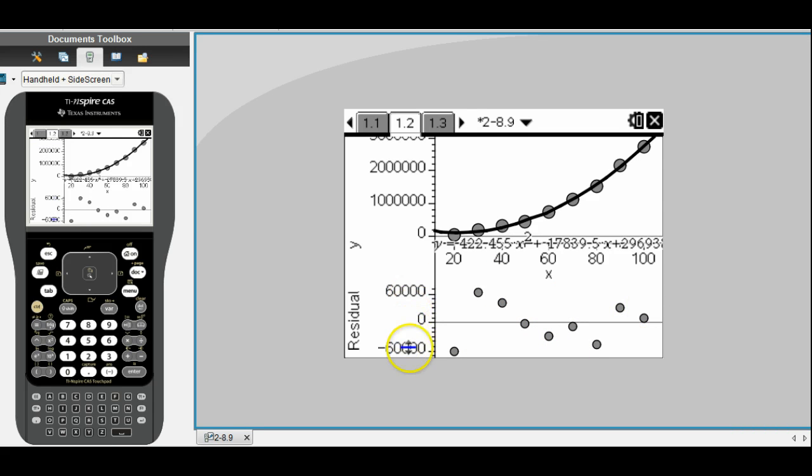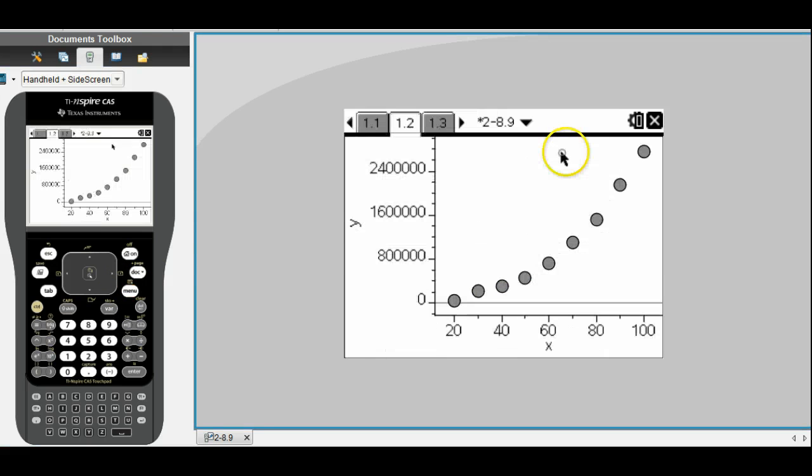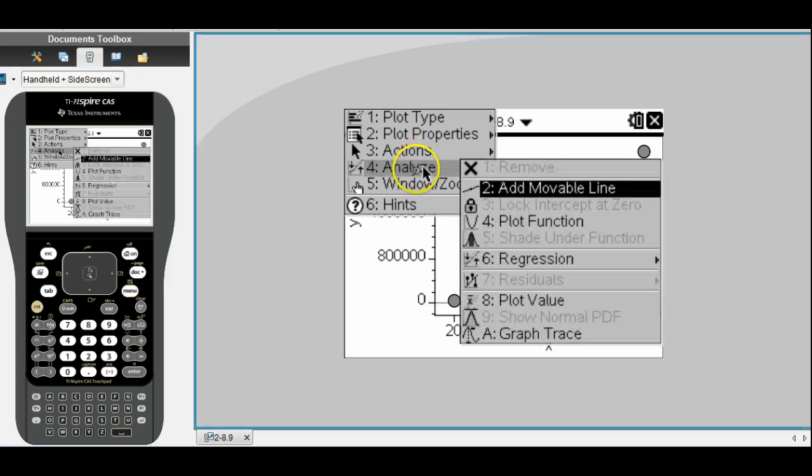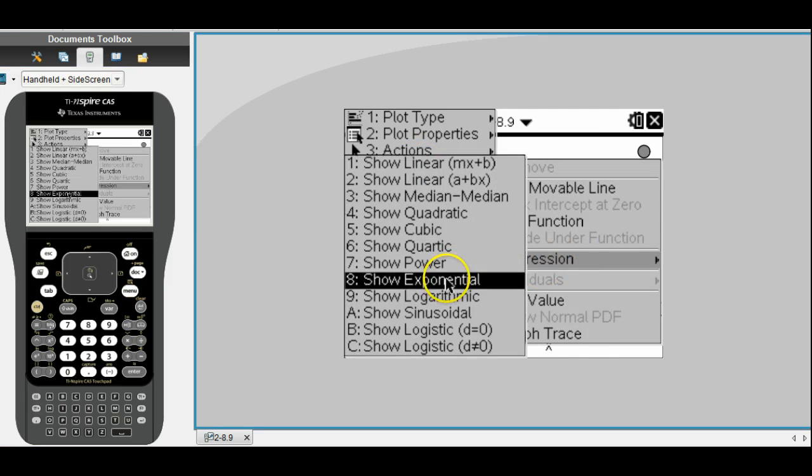Make a quick sketch of that residual plot onto your paper as well. Making note of the fact that the scale is important here, you're not able to choose the scale. So we have to trust the scale that the calculator is choosing for us. We need to record that when we write our pictures. That's the quadratic model. Let's hide that. Menu actions hide. And then let's do it again for exponential. Menu analyze regression exponential.